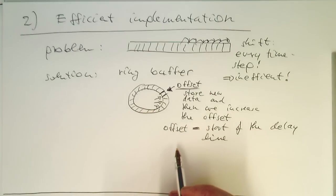So that's the idea of this. And this offset is changing at every time step. It's increased. So how do we do this in an efficient implementation?